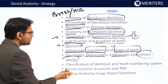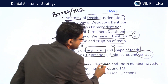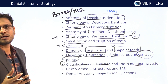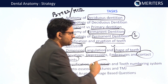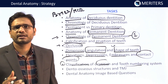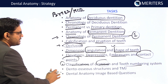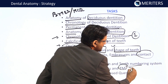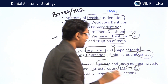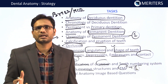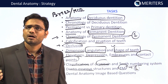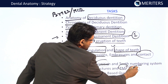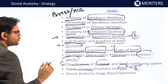Classification of dentition and tooth numbering systems must be memorized. In NEAT, they generally ask about classification of dentition, such as haplodont and related terms. Dentulous structures and TMJ are also important — TMJ fetches at least one question, either from the dental anatomical aspect, the oral surgery aspect, or the histological aspect, and this year one such question was asked.